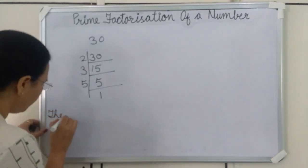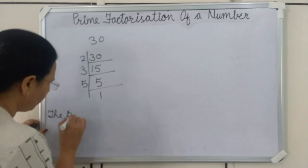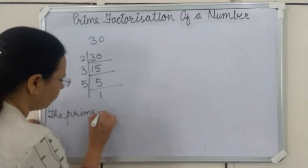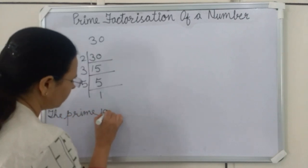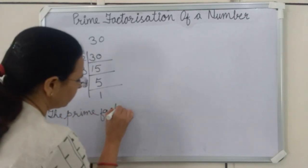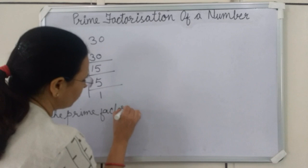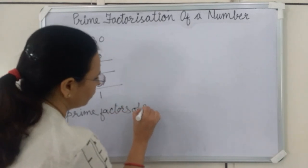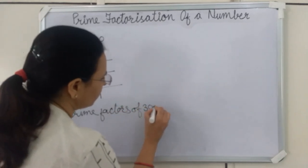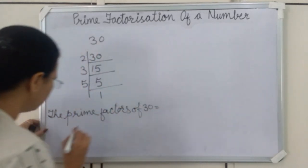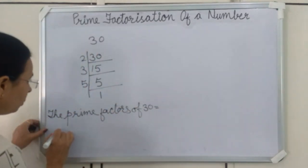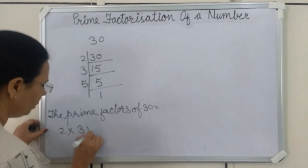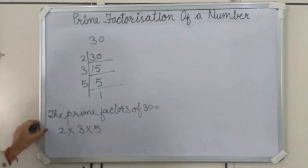The prime factors of 30 are equal to 2, 3, and 5.